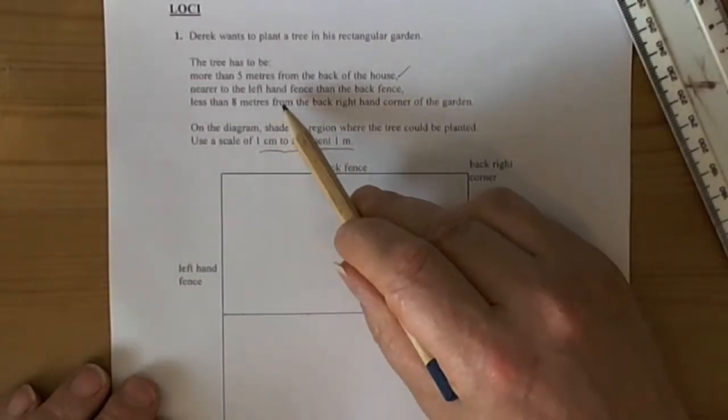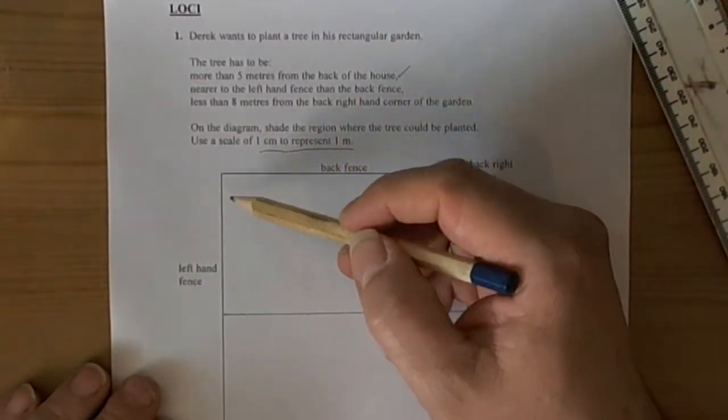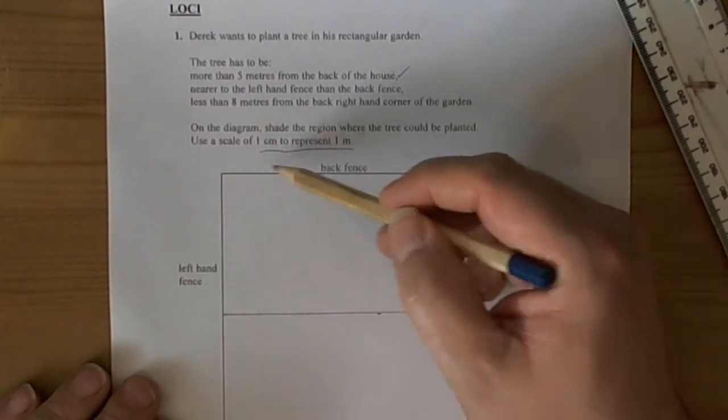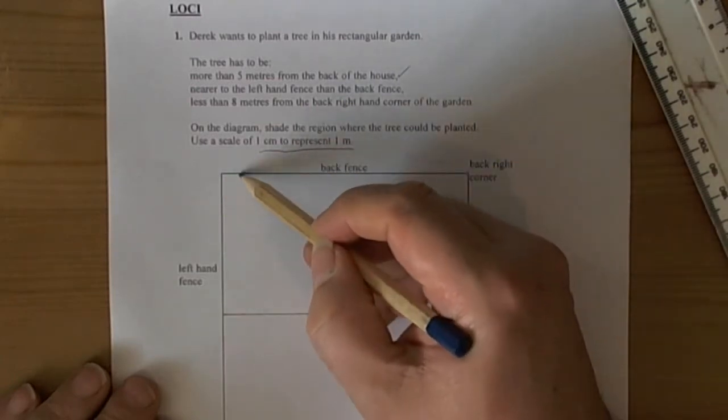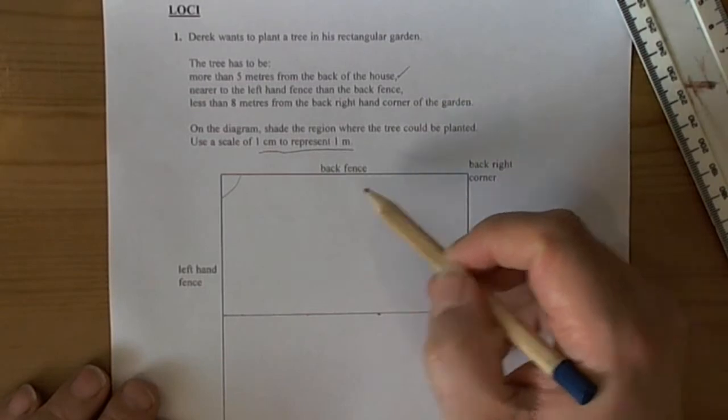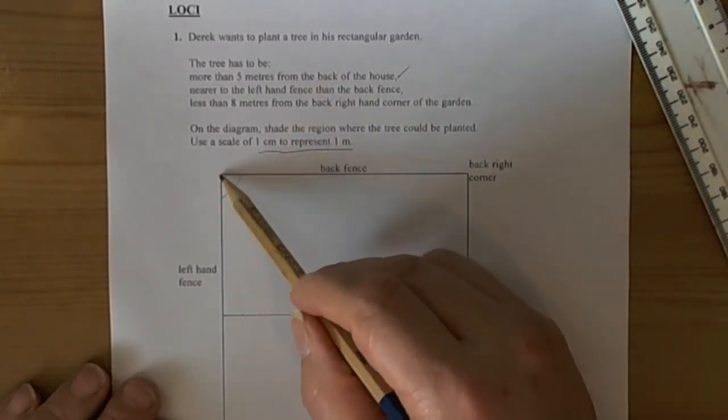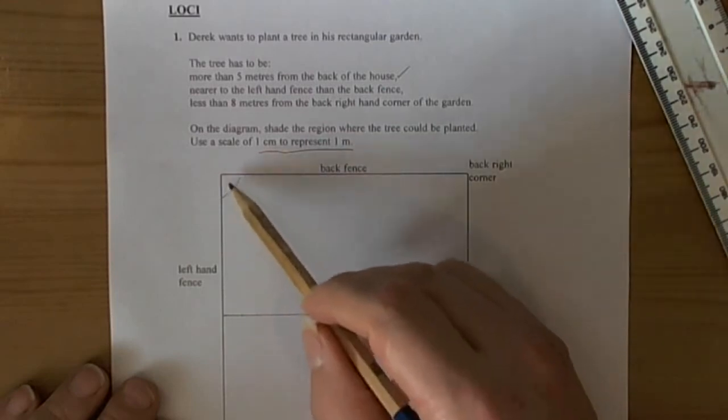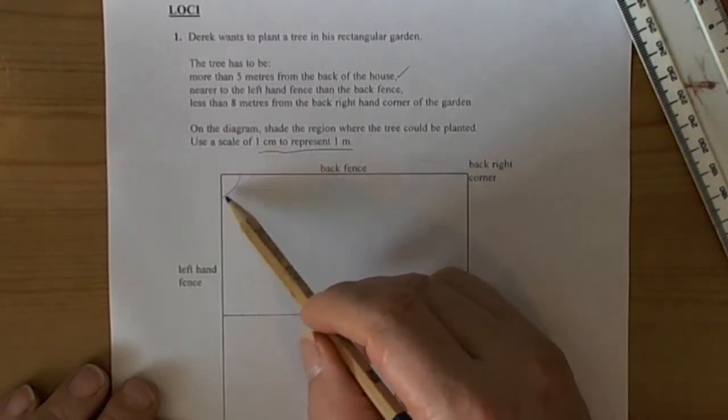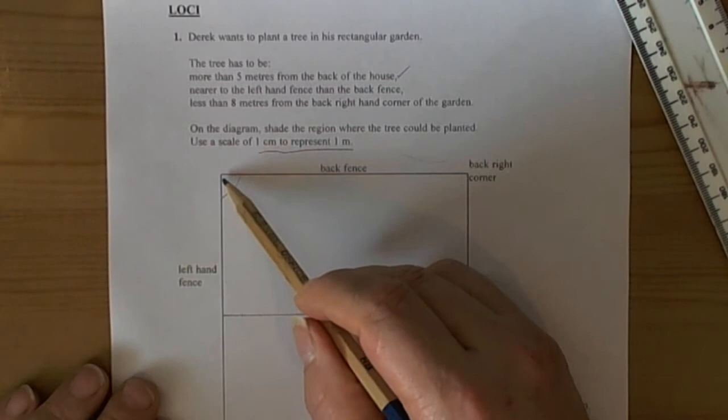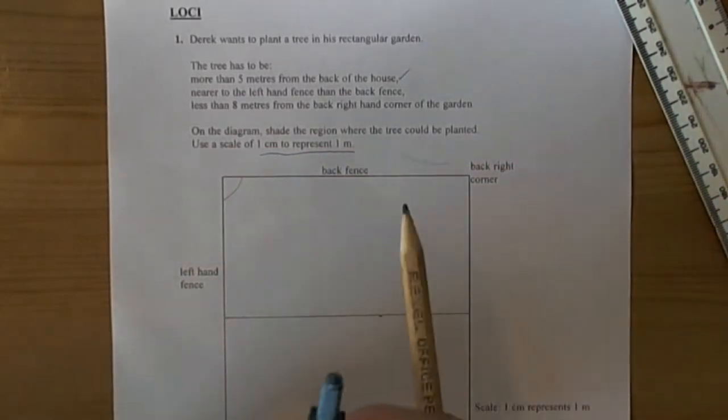The next one says it's supposed to be nearer to the left hand fence than the back fence. Well the left hand fence is a straight line and the back fence is a straight line. And they both create an angle between them. So it has to be nearer to the left hand fence than the back fence. Then we're looking for the path that's equal between the two lines. And because the two lines create an angle, we're going to draw an angle bisector.